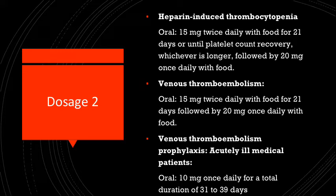For patients taking Rivaroxaban for heparin-induced thrombocytopenia, they are dosed at 15 milligrams twice daily with food for 21 days, or until platelet count recovery, whichever is longer, followed by 20 milligrams once daily with food. For those taking Rivaroxaban for venous thromboembolism prophylaxis, it is 10 milligrams once daily for a total duration of 31 to 39 days.